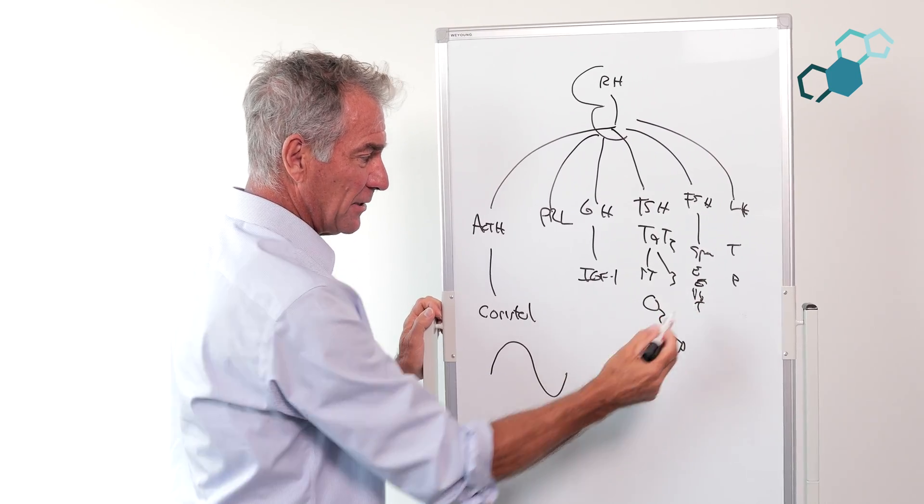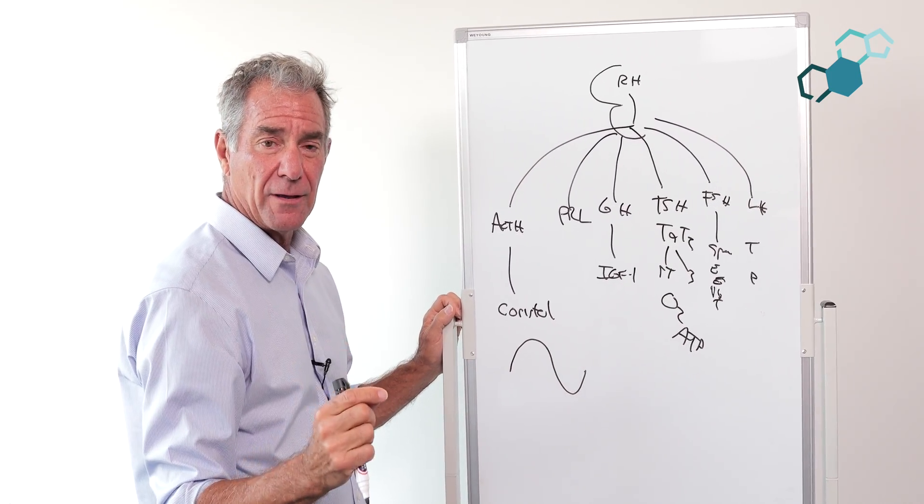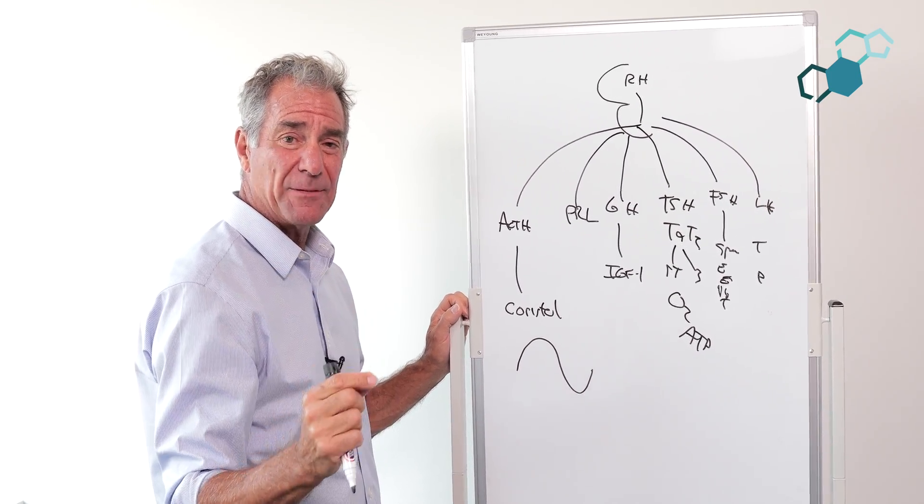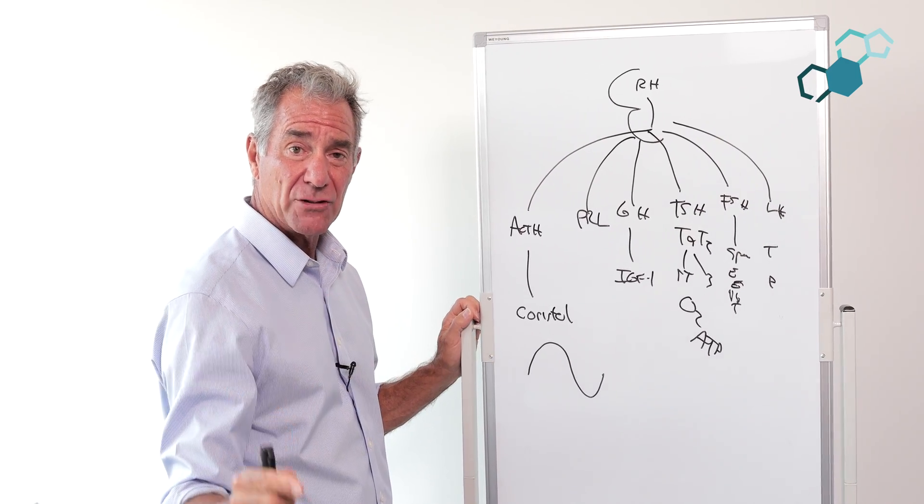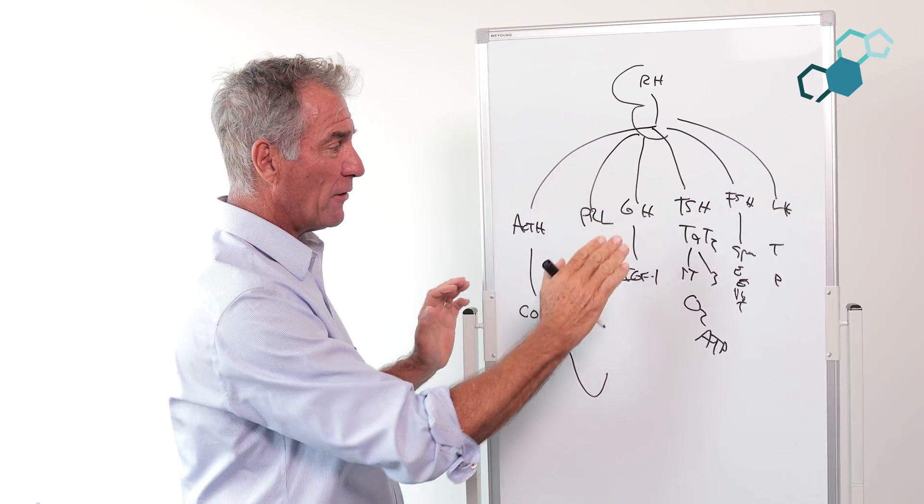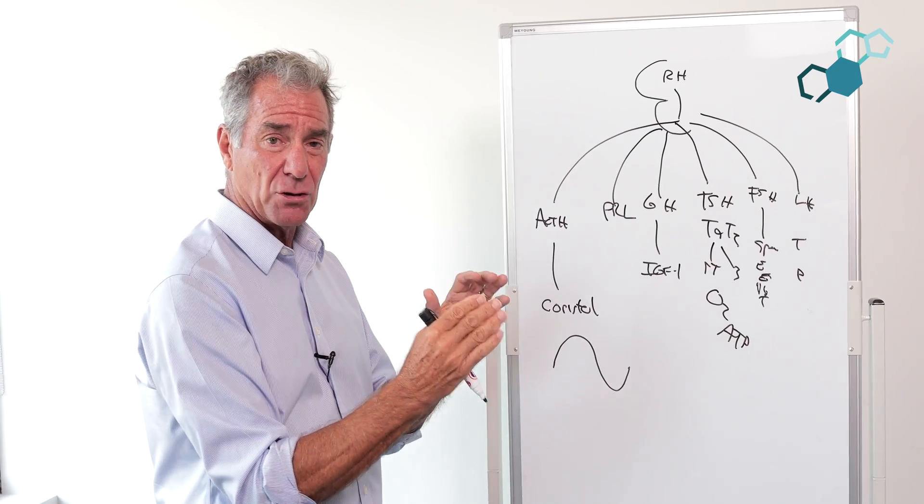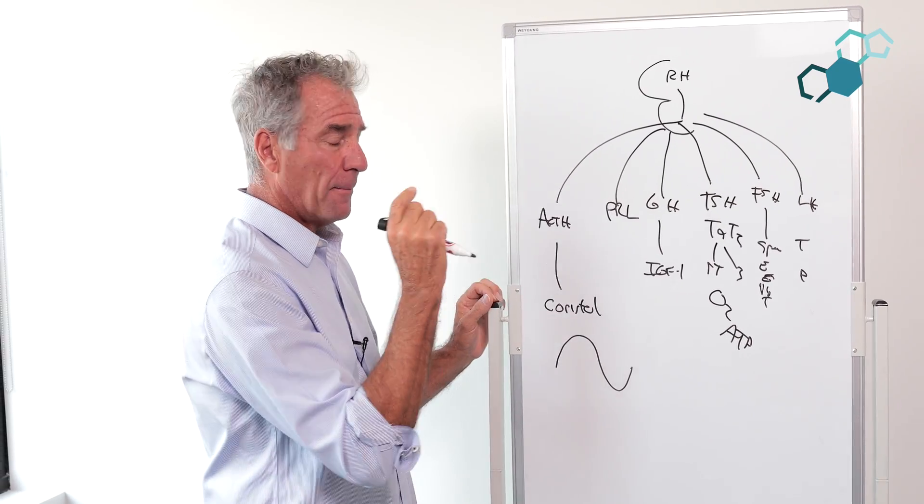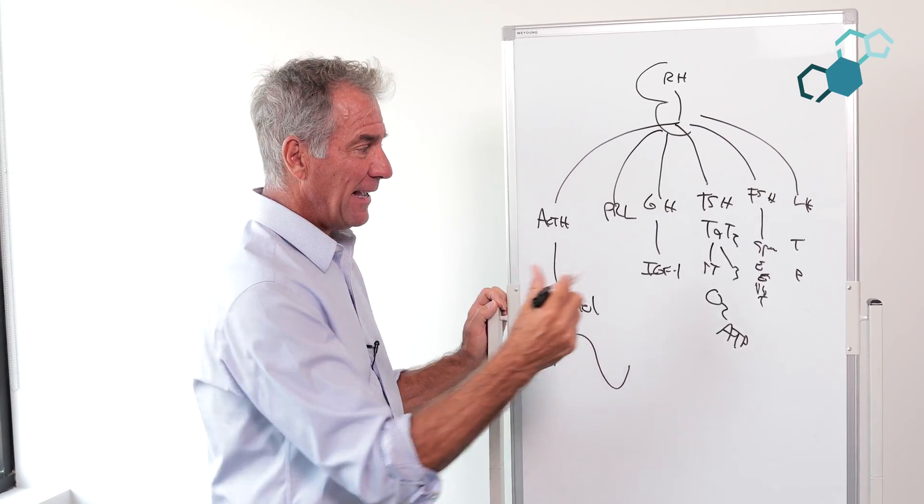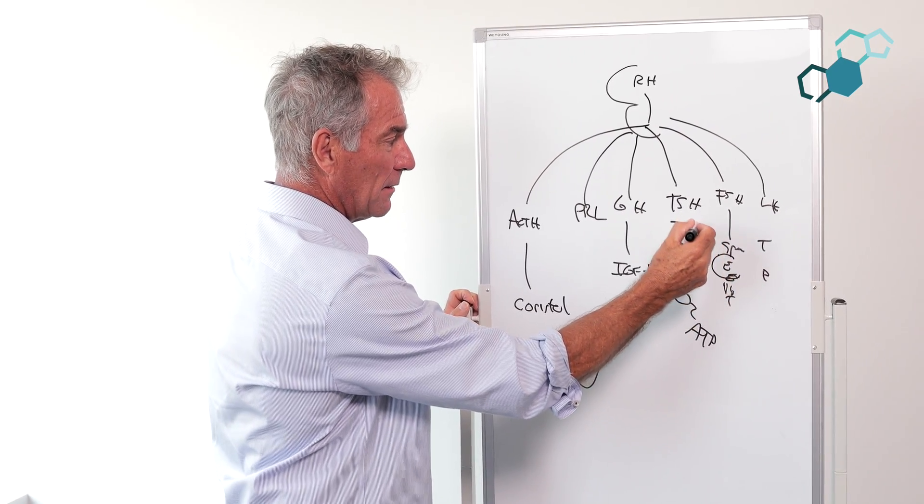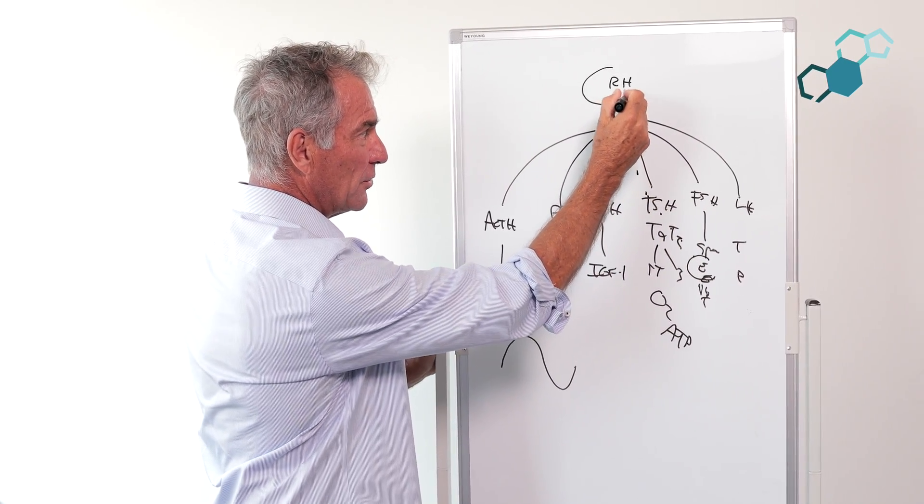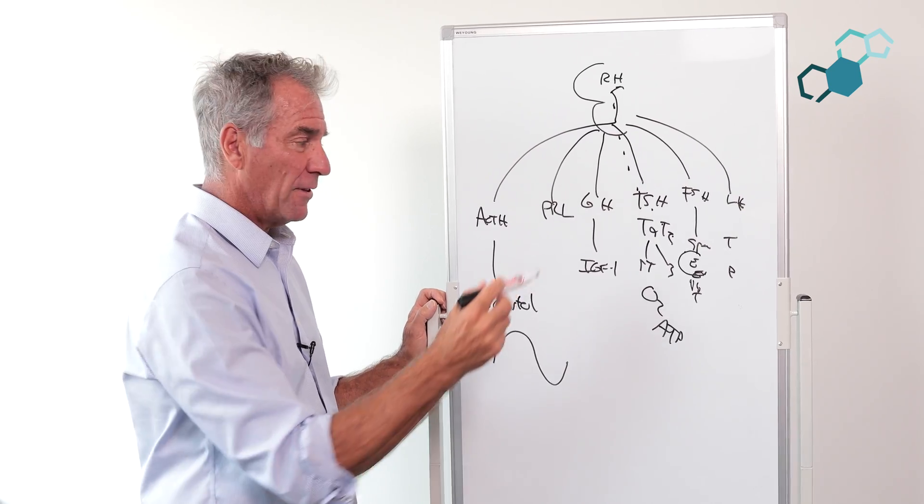In women, estrogen converts to testosterone. Yes, that's an oxymoron, but women in their youth make four to ten times more testosterone than estrogen. The reason why I draw this is I want to have a nice picture of how the brain works. But it's very important to understand is estrogen in both men and women is what turns everything off.